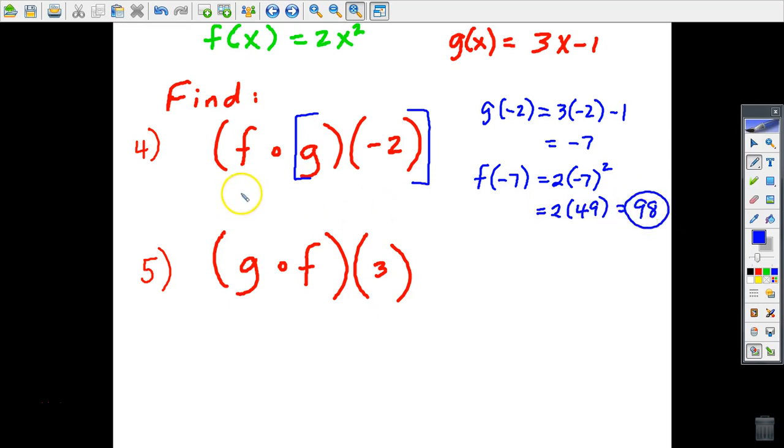And again, I'll show it in my preferred way. Always, in my preferred way, you just think working from the inside out. G of negative 2 is negative 7, and then you're going to be evaluating F of negative 7.